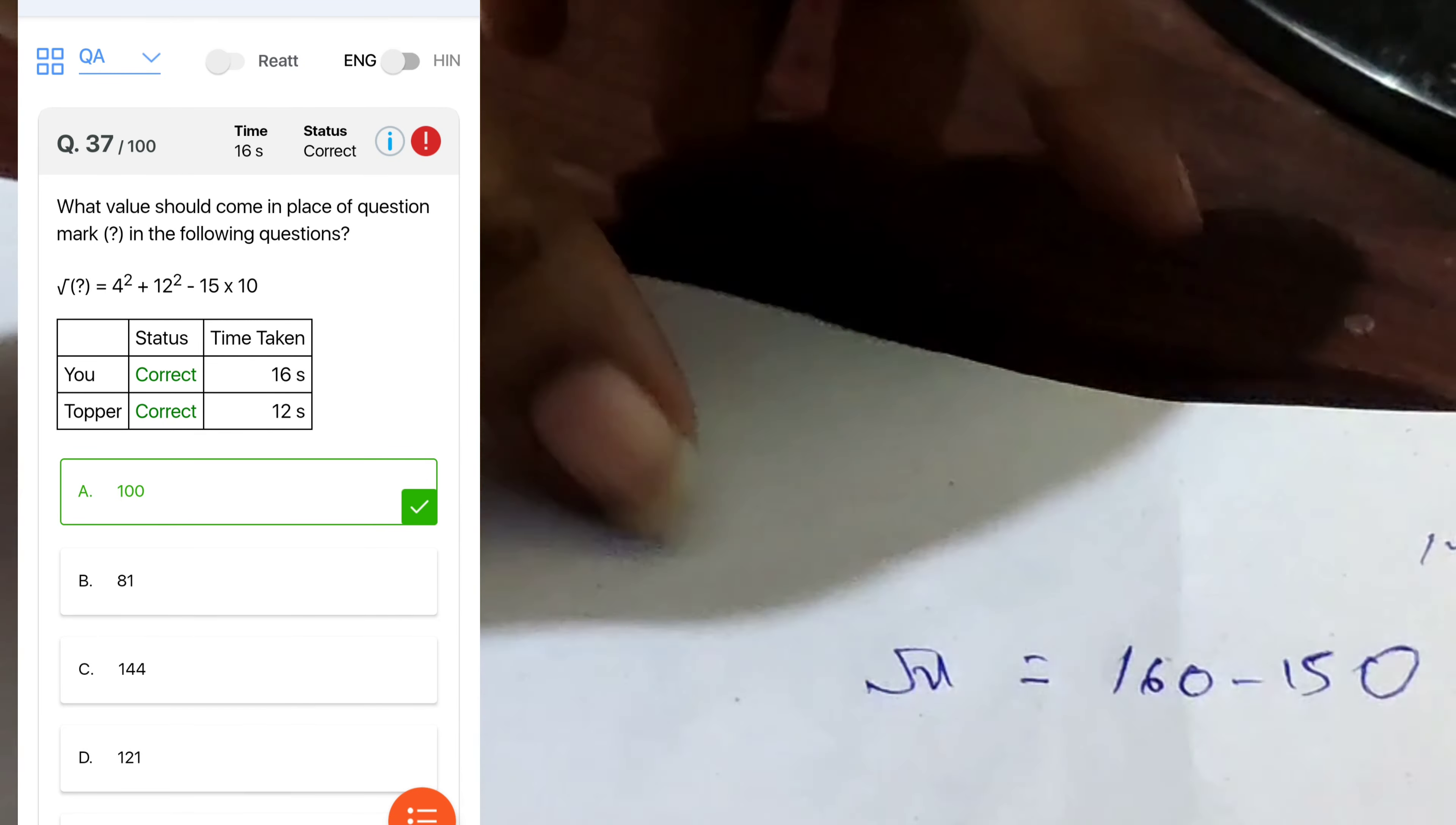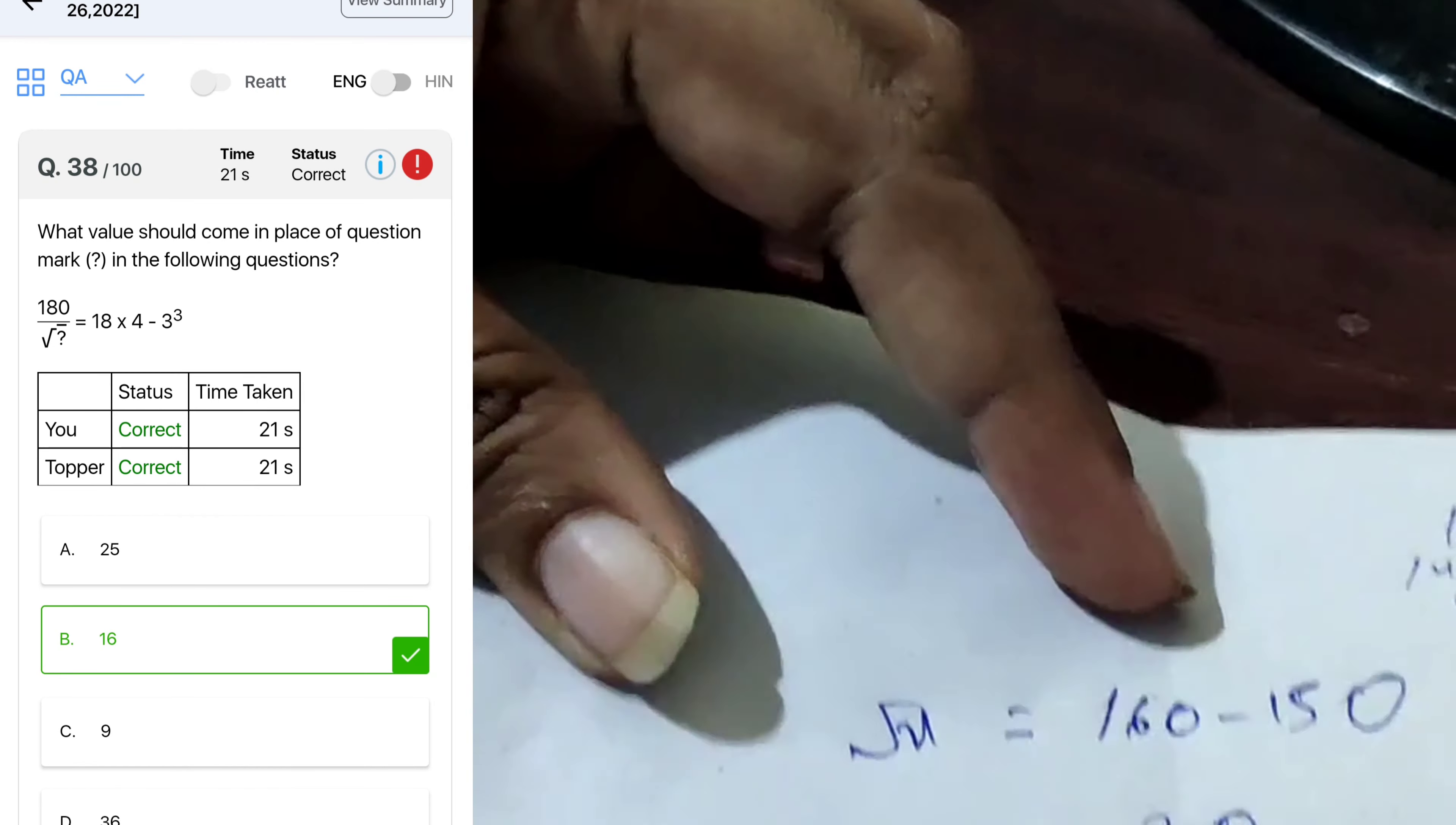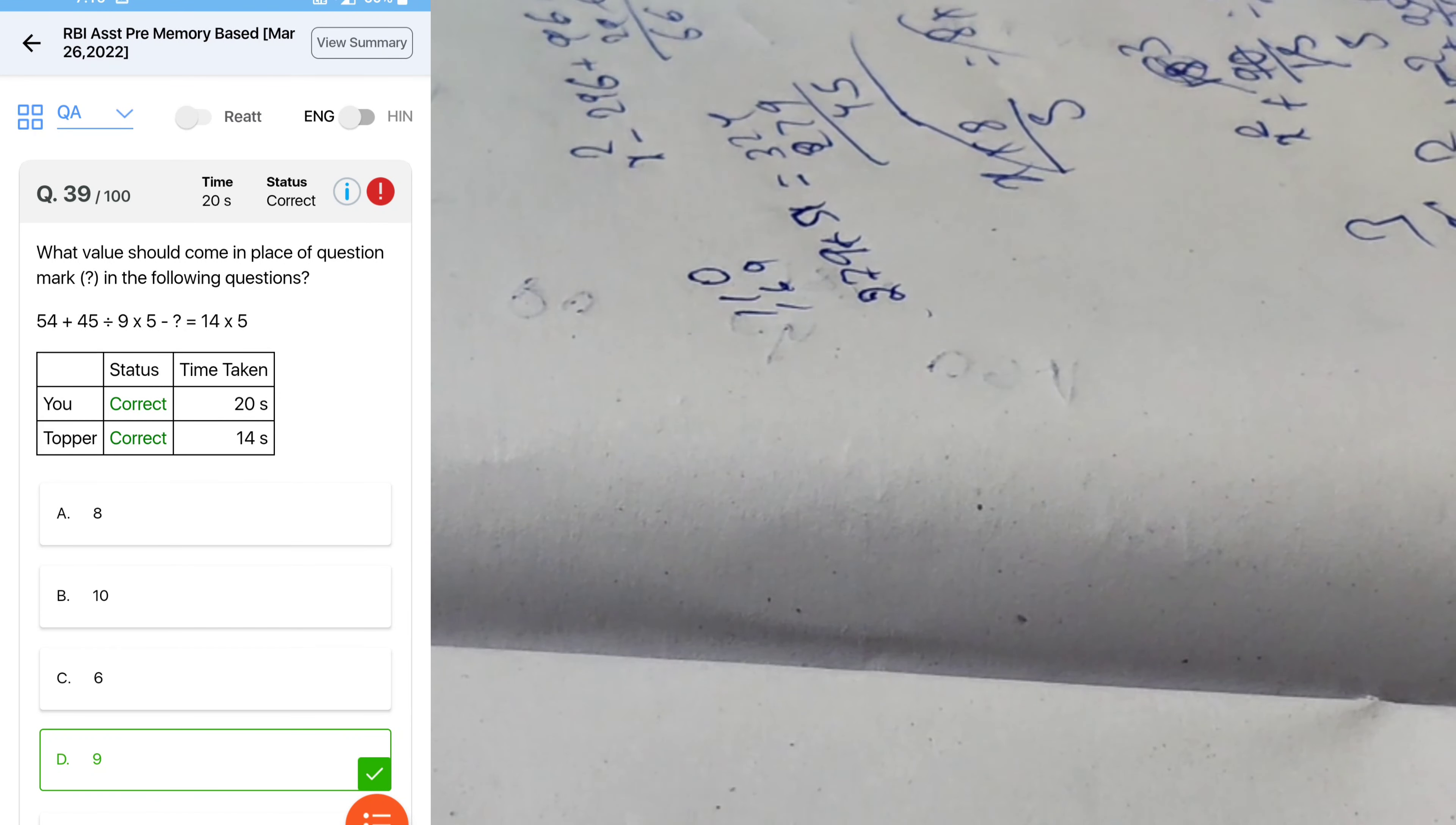Next question, root x equal to 4 square 16, 12 square 144, 06, 16 minus 150 is 10, 100. Option 180 by root x, 72 minus 27, so 545.